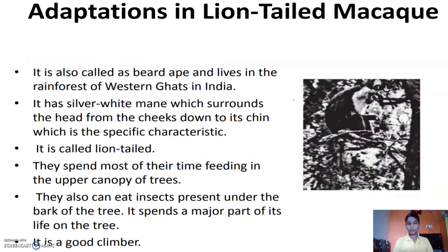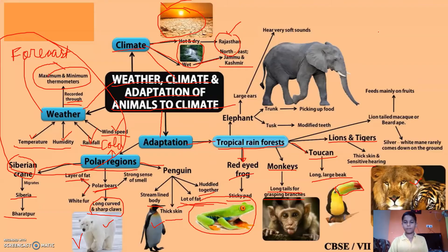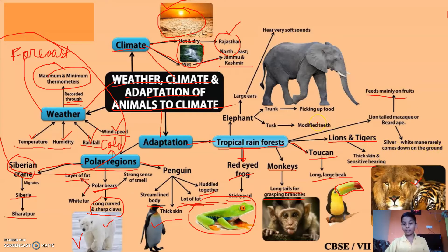The long-tailed lion macaque — let me show you. Right here you can see the adaptation of the lion-tail macaque. They feed mainly on fruits and are silver-white. They rarely come down to the ground. Now let's see the adaptation of the elephant.